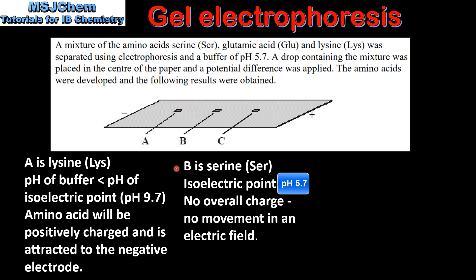Amino acid B is serine. The isoelectric point of serine is 5.7, which is the same as the pH of the buffer solution. Therefore the amino acid will have no overall charge and no movement in an electric field.